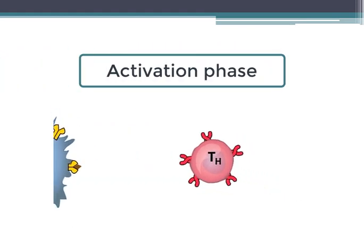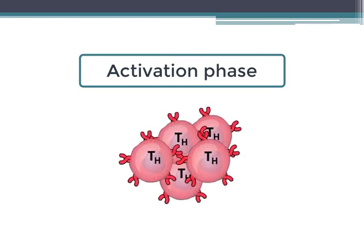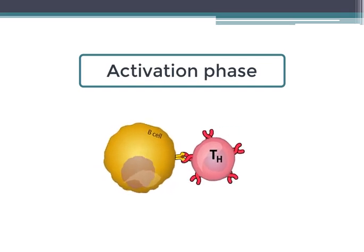And now that the activation phase started, the activated T helper cells proliferate, giving rise to a clone of T helper cells that share the same T cell receptors. Some of those T helper cells will differentiate into interleukin secreting cells.